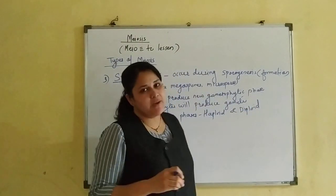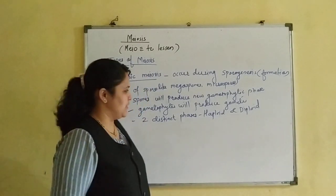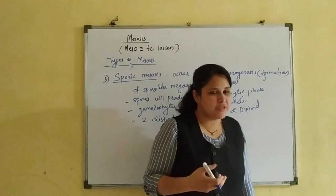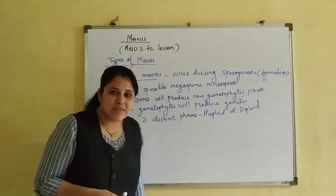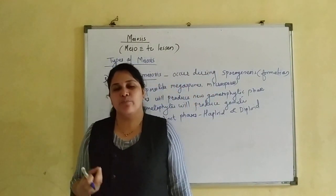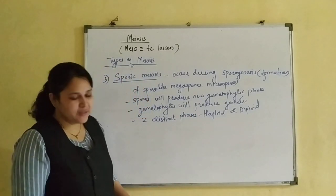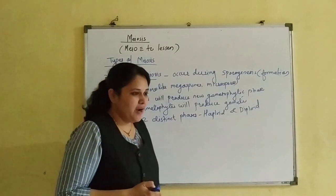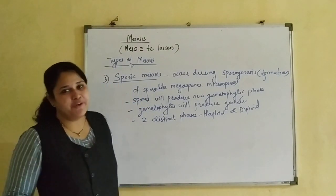In sporic meiosis, initially a haploid plant produces gametes, which are haploid. The spore mother cells are diploid and undergo meiotic division to produce haploid spores. These spores germinate and give rise to another phase called the gametophyte. The main plant body which produces spores is known as the sporophyte. So there are two phases - the sporophytic phase and the gametophytic phase.